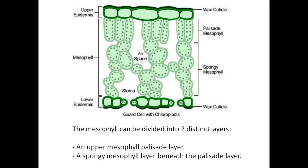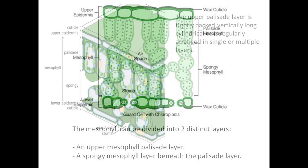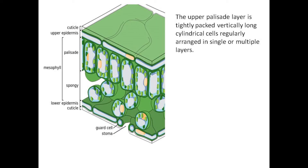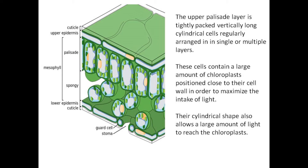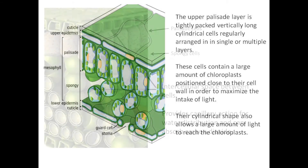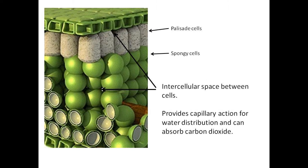The mesophyll can be divided into two distinct layers: an upper mesophyll palisade layer and a spongy mesophyll layer beneath the palisade layer. The upper palisade layer is tightly packed, vertically long cylindrical cells regularly arranged in single or multiple layers. These cells contain a large amount of chloroplasts positioned close to the cell wall in order to maximize the intake of light. Their cylindrical shape also allows a large amount of light to reach the chloroplasts. Here is a diagram of the intercellular space between cells of the mesophyll layer. The intercellular space provides capillary action for water distribution and can absorb carbon dioxide.